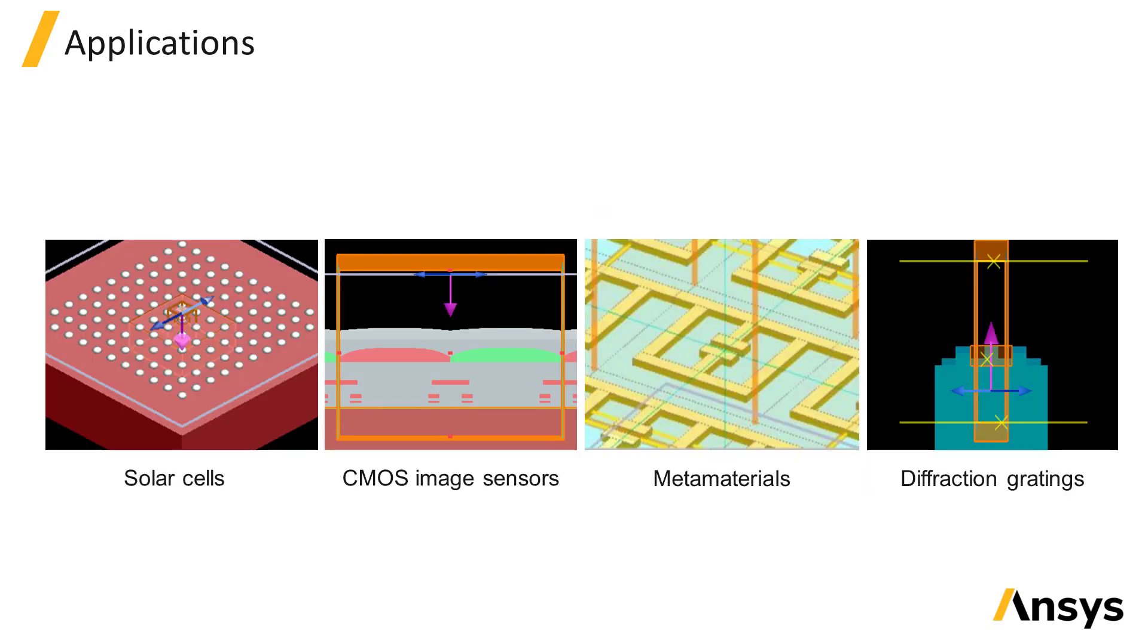Some common applications which use the plane wave sources are solar cells, CMOS image sensors, metamaterials, and diffraction gratings. For the solar cell and CMOS image sensor design, we commonly vary the incident angle of the source and obtain the observable absorption collection efficiency of the design as a function of source angle.